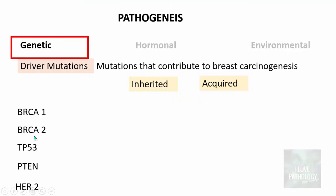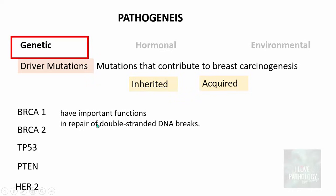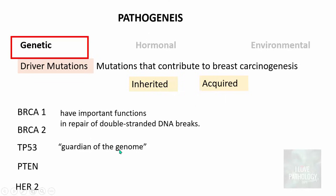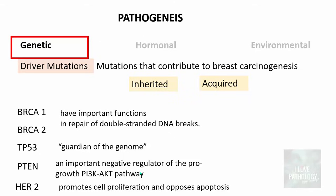The important genes involved in breast cancer are BRCA1, BRCA2, TP53, PTEN, and HER2. BRCA1 and BRCA2 are involved in the repair of double-stranded DNA breaks. TP53 is the guardian of the genome. PTEN is an important negative regulator of the pro-growth PI3K/AKT pathway. HER2 promotes cell proliferation and opposes apoptosis.